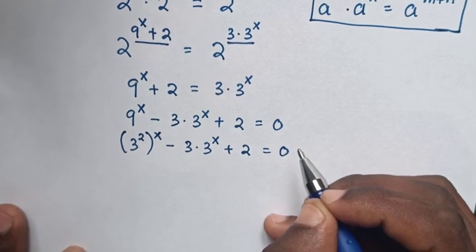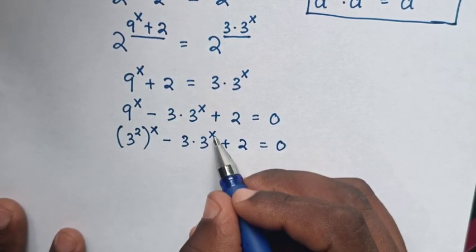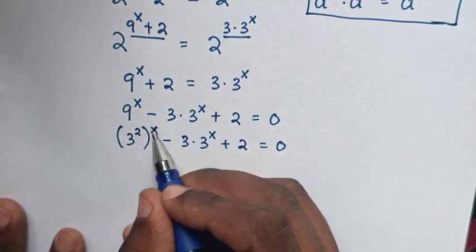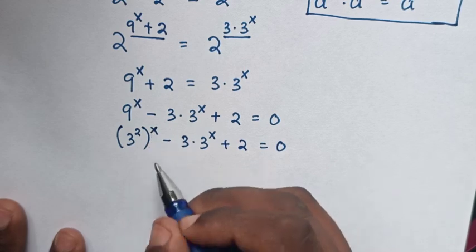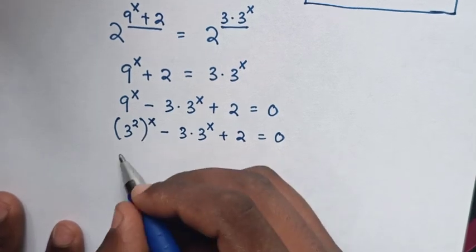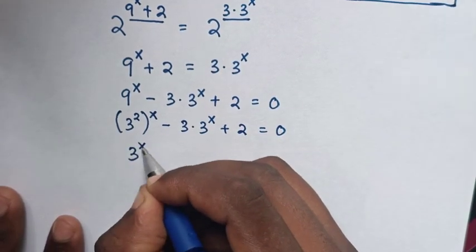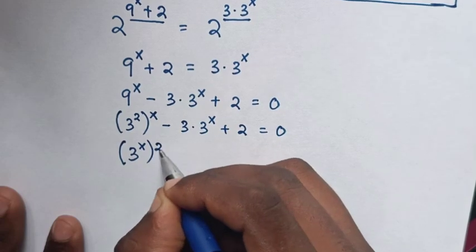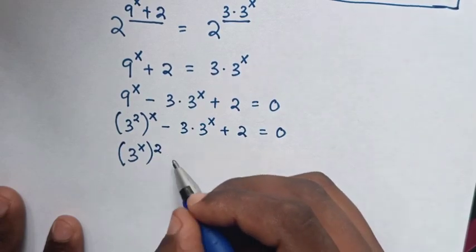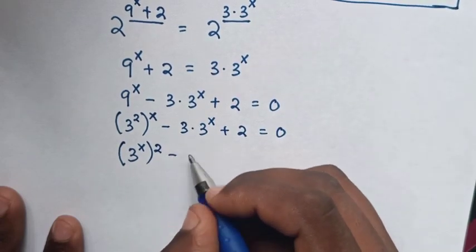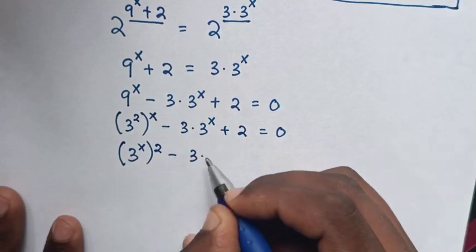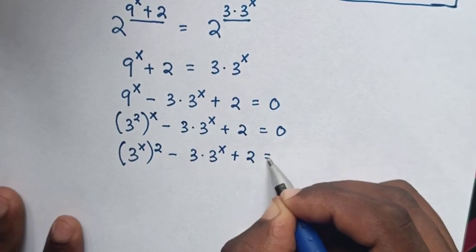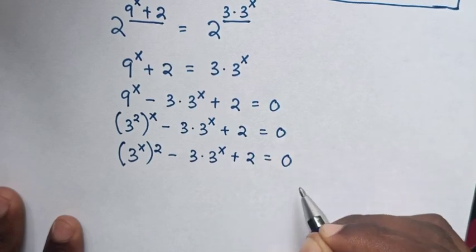Then in the next step, because we have 3^x here, we will exchange the power inside the bracket. So here it will be (3^x)^2 minus 3 times 3^x plus 2 is equal to 0.